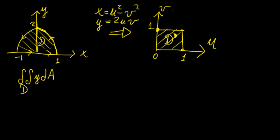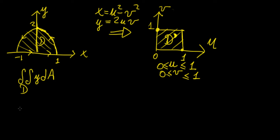We're given a simplification for the problem: a transformation where u² - v² = x and 2uv = y. The domain is transformed into a unit square, so the limits of integration are now simplified to constant limits from 0 to 1. We're going to transform from x-y coordinates to uv coordinates by performing a change of variables.